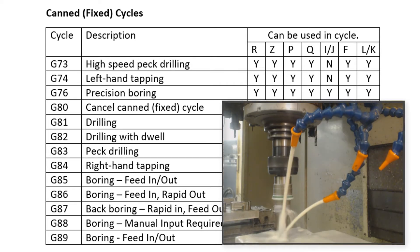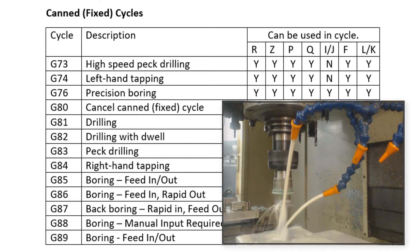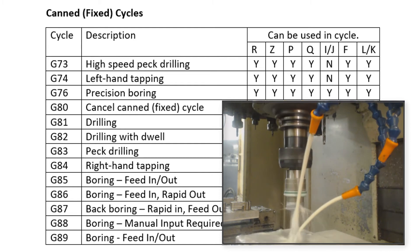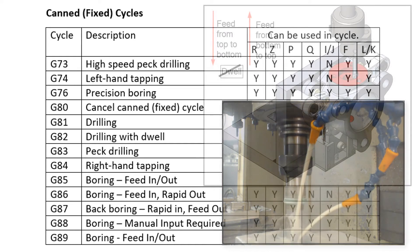G84 is the right-handed tapping code. It will spin the tool clockwise while it feeds to the programmed depth, then it will reverse the spindle and feed the tap out of the hole.